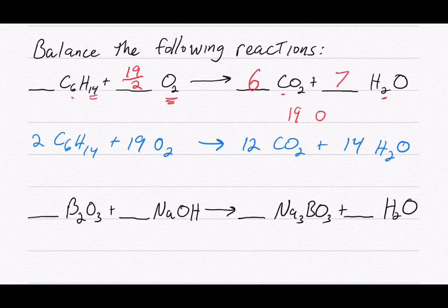First, I want to balance boron. I've got two boron in the reactants and just one in the products, so I'm going to need two there. I'm going to wait on my oxygens because I've got oxygens in two places in the reactants and two places in the products, which can get a little messy. So I'm going to hold off on those and hope that they balance out in the end.